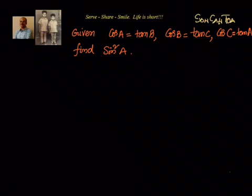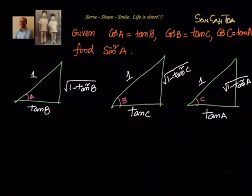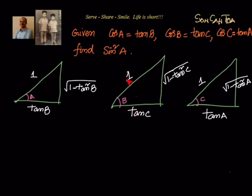To start, let us get the triangles in place so we can understand how A, B, and C are related to each other. We use cos A equals tan B, cos B equals tan C, and cos C equals tan A, and fill in the remaining sides using the Pythagorean theorem, giving us roots of 1 minus tan²B, 1 minus tan²C, and 1 minus tan²A.